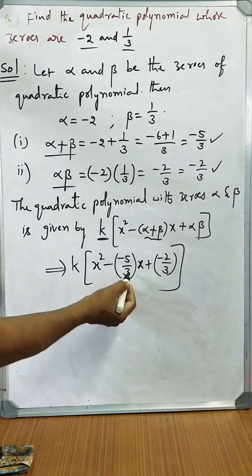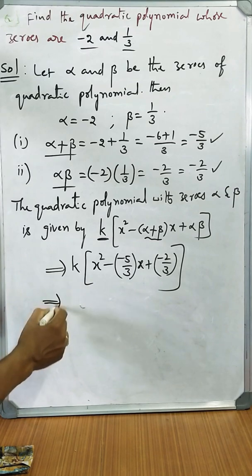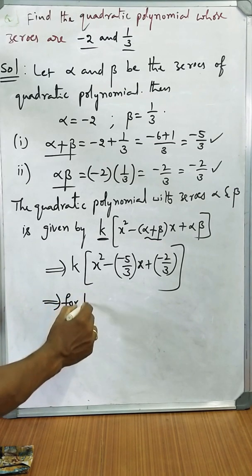To avoid the denominator, we should take k equals 3. For k equals 3, the quadratic polynomial becomes, let us multiply by 3.